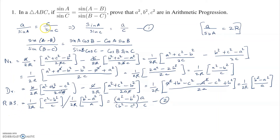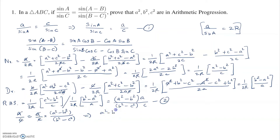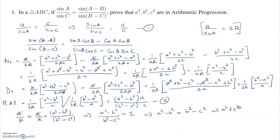From equations 1 and 2, given that sin A by sin C equals sin(A minus B) by sin(B minus C), we have a by c equals a by c times (a squared minus b squared) divided by (b squared minus c squared). After cancellation, a squared minus b squared divided by b squared minus c squared equals 1, so a squared minus b squared equals b squared minus c squared. Rearranging gives a squared plus c squared equals 2b squared.